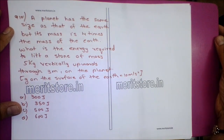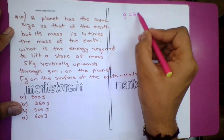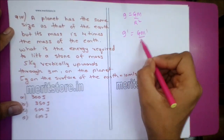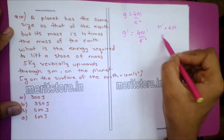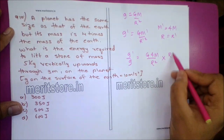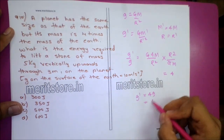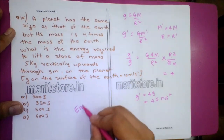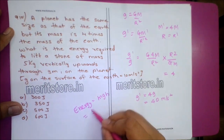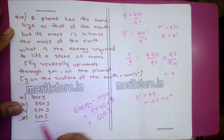Question 10: A planet has the same size as Earth but its mass is 4 times. What is the energy required to lift a 5 kg stone through 3 meters? g' = G(4M)/R² = 4g = 40 m/s². Energy = mg'H = 5 × 40 × 3 = 600 J. Option D, 600 J, is the correct answer.